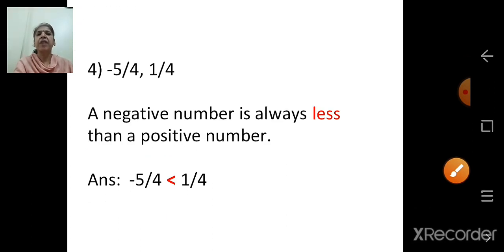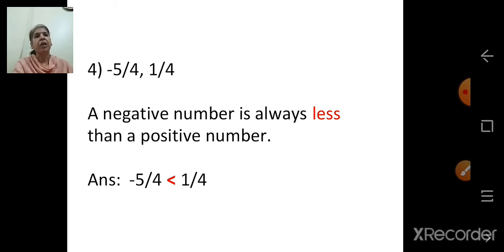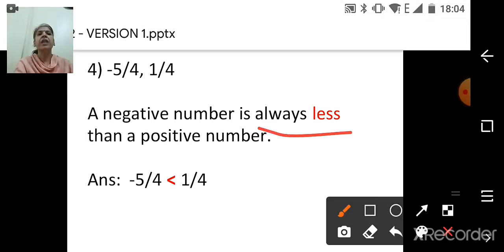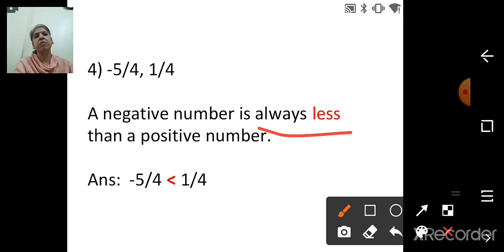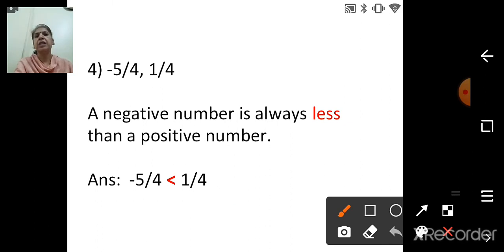Next: negative 5 upon 4 and 1 upon 4. One number is negative and one number is positive. Negative 5 upon 4 is a negative number; 1 upon 4 is a positive number. A negative number is always less than a positive number. So the answer is: negative 5 upon 4 is less than 1 upon 4.